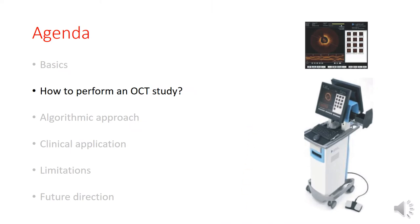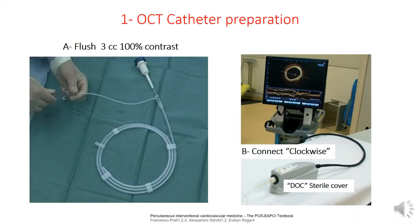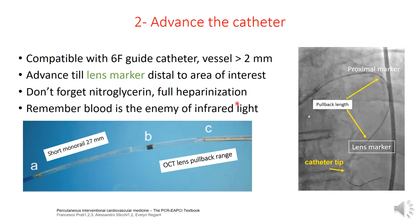So how to perform a comprehensive OCT study? This is the commonly used catheter — the Dragonfly Optus catheter — which comes with a side arm. We flush the side arm with 3cc of 100% contrast, then cover the drive motor unit with a trial cover, and insert the end into the drive motor unit via clockwise rotation until you hear a click. The profile of the OCT catheter is about 2.8 French, so it is compatible with our 6 French guide catheter.